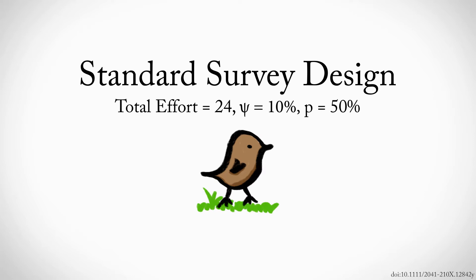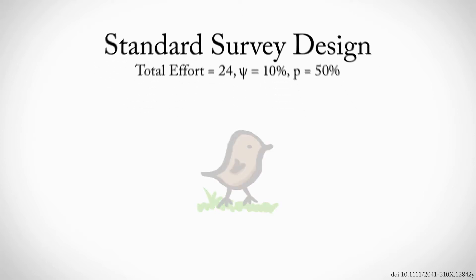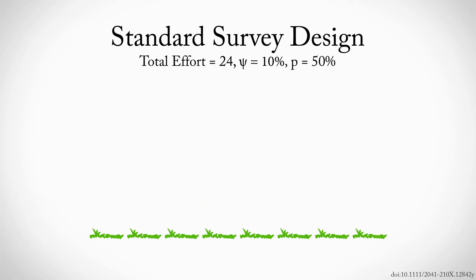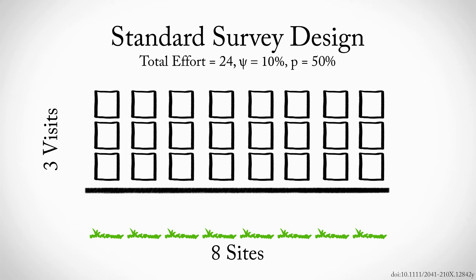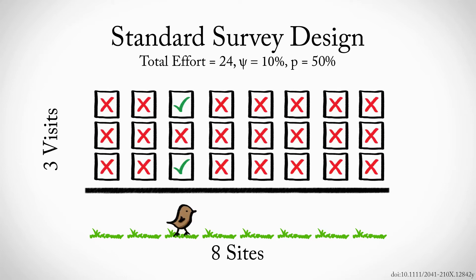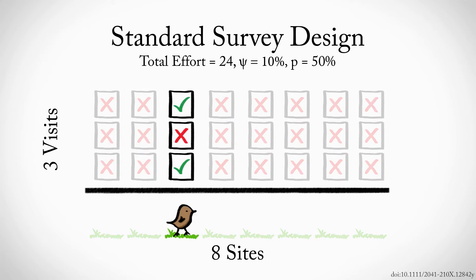Let's suppose we do 24 total surveys. The standard design has us visiting 8 sites and surveying each one 3 times. On average, only one of these sites will be occupied, and we'll detect that bird on one or two of our three surveys of the site. Most of our effort was spent visiting unoccupied sites, with only three total visits to occupied sites.